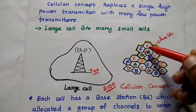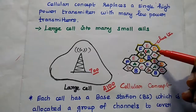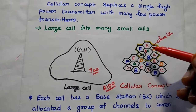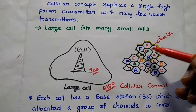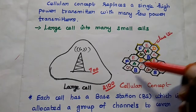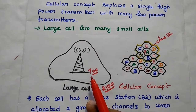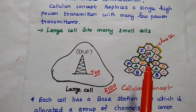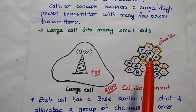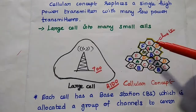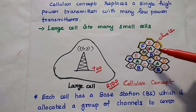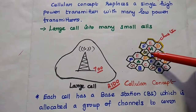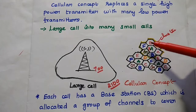Each cell has its own base station, and each base station is allocated with a portion of the total channels. Here we have 700 frequency channels. We can create a cluster with 7 cells, with an equal portion of channels — so 700 can be split into 100 channels for each cell.